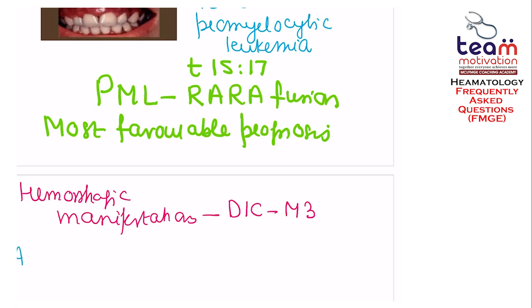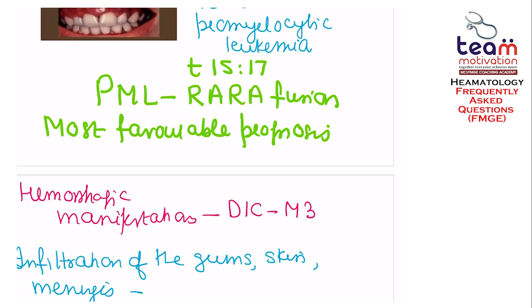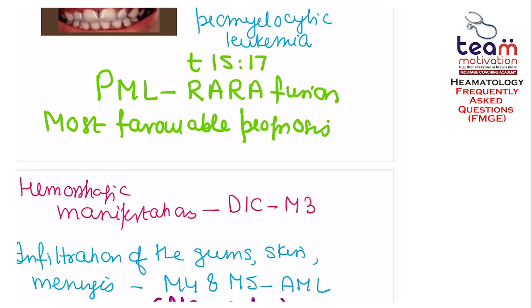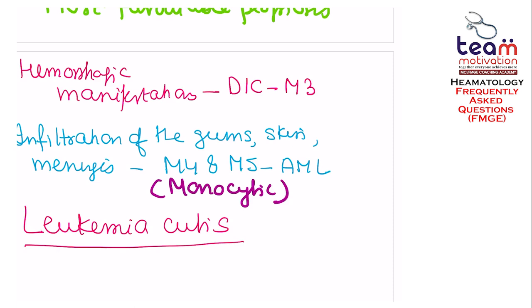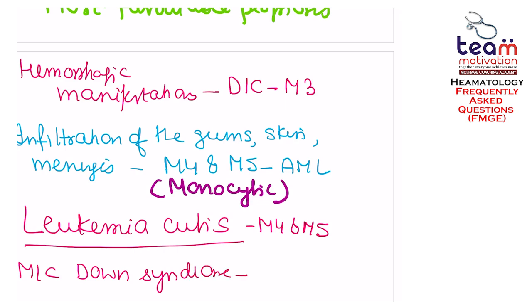Infiltration of the gums, skin, and meninges is seen in M4 and M5 type of AML, which is the monocytic type. Skin involvement is also called leukemia cutis, and that is seen in M4 and M5 type. The most common type of AML in Down syndrome is the M7 type, called the megakaryocytic type.